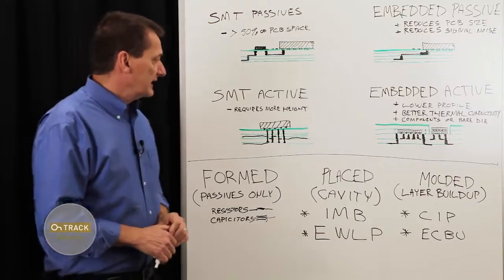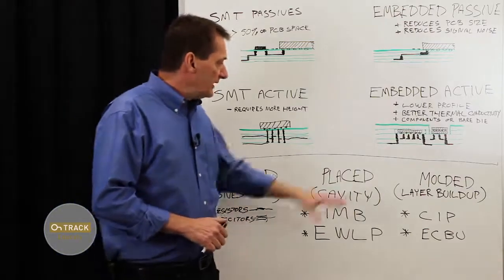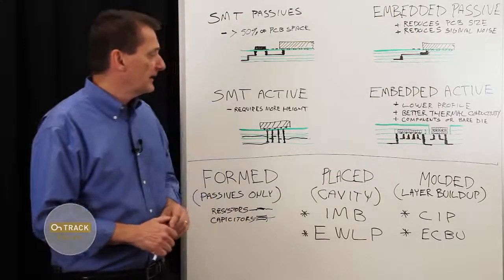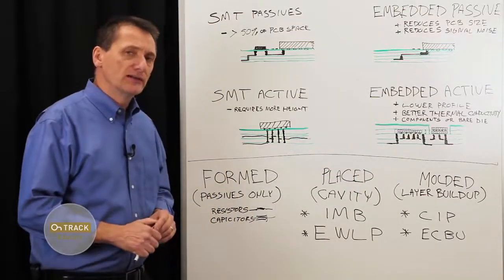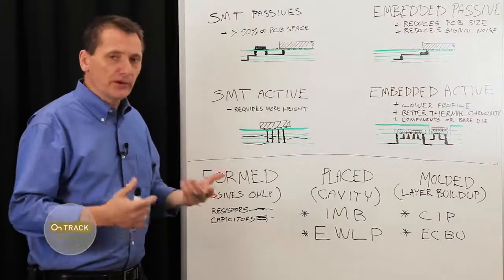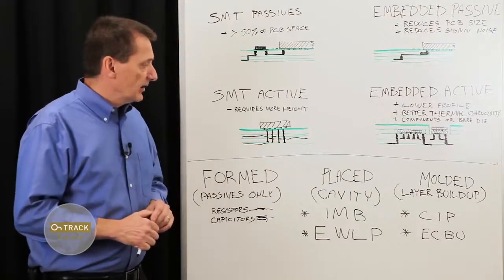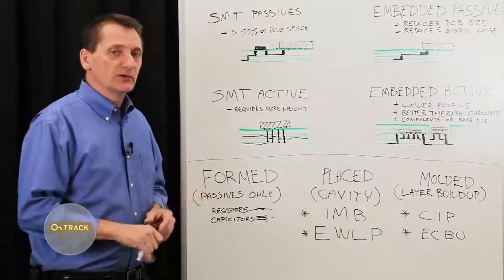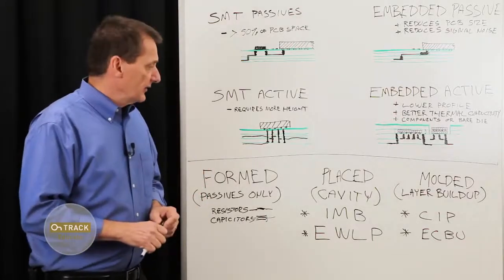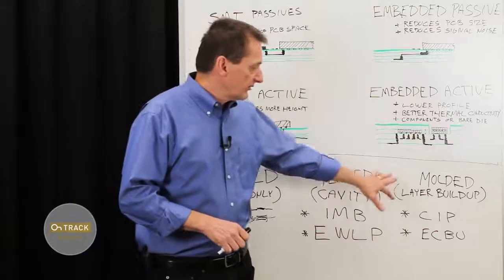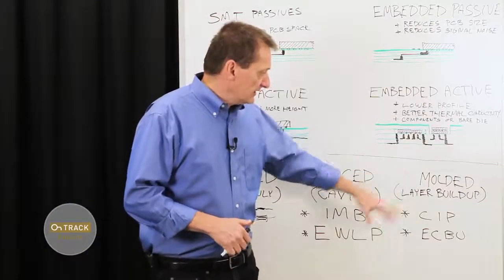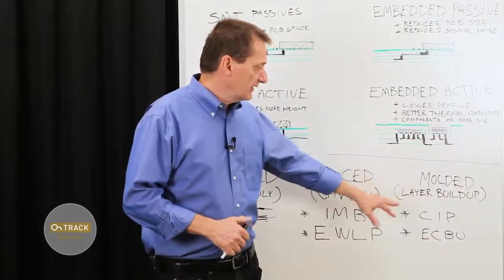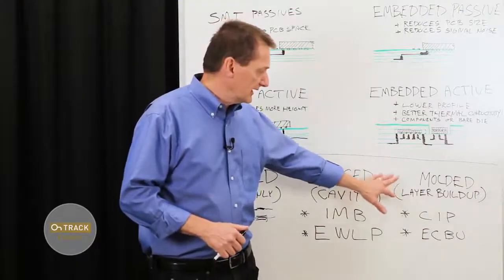Now the third technique is a little different. It's referred to as molded. And here it's a process where the component is mounted on a substrate or the bare die on a substrate layer. And then the layering is built up through additional layers of polymer. So this can be done for special cases where flexing is needed, and it's just another category of techniques that your fabricator can implement.